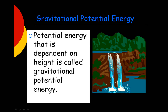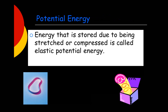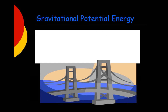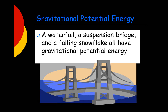Gravitational potential energy — potential energy that depends on height — is called gravitational potential energy. Energy that is stored due to being stretched or compressed is called elastic potential energy. A waterfall, a suspension bridge, and a falling snowflake all have gravitational potential energy because they are all above the ground at some height measured in meters.